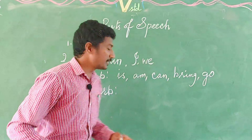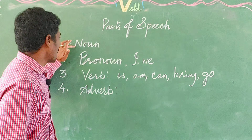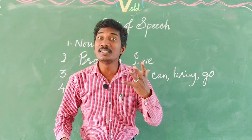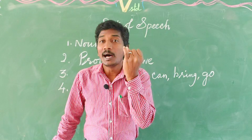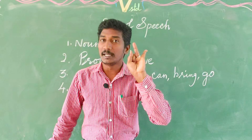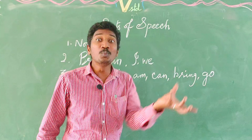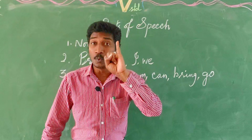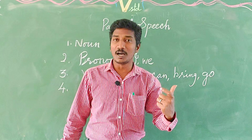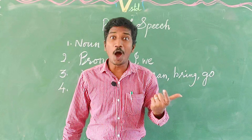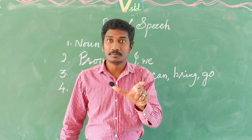After verb, I have written Adverb — so you can remember easily: noun, pronoun, verb, adverb. What is adverb? An adverb is a word which says something more about a verb, an adjective, or another adverb. It qualifies or describes these words. For example: 'She runs fast.' How did she run? Fast. So 'run' is a verb and 'fast' is the adverb.